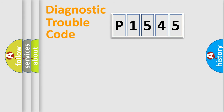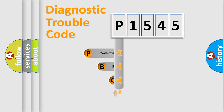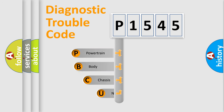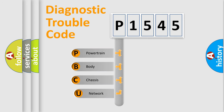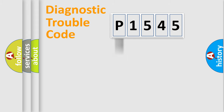Let's do this. First, let's look at the history of diagnostic fault code composition according to the OBD2 protocol, which is unified for all automakers since 2000. We divide the electric system of an automobile into four basic units: Powertrain, Body, Chassis, and Network.